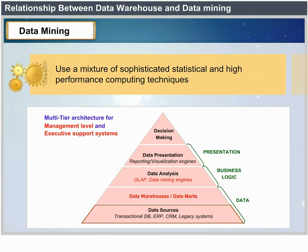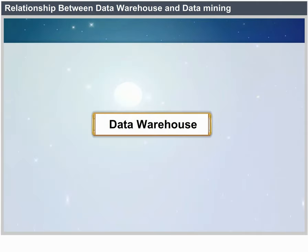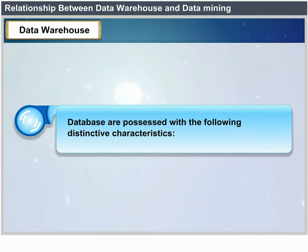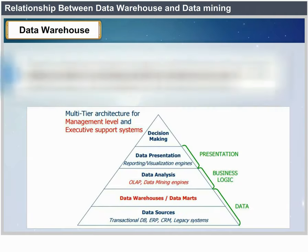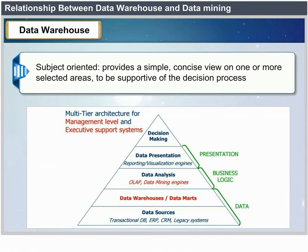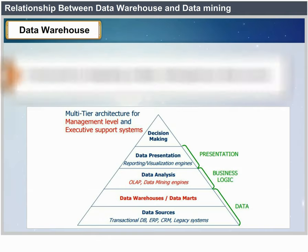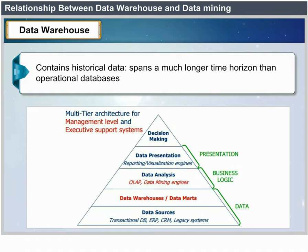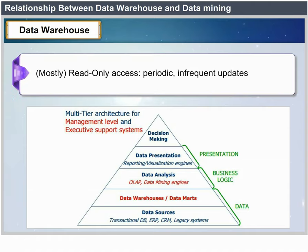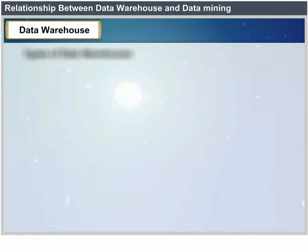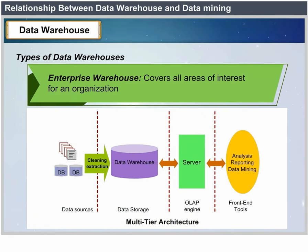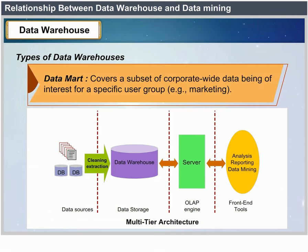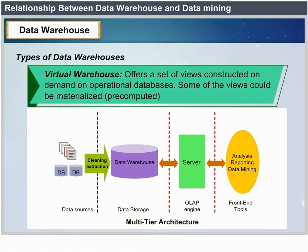OLAP (Online Analytical Processing) provides reporting based on multidimensional data analysis, with read-only access on repositories of moderate-to-large size — typically data warehouses — aiming at maximizing response time. Data mining involves the discovery of novel implicit patterns from possibly heterogeneous data sources, using a mix of sophisticated statistical and high-performance computing techniques. A data warehouse is a database with distinctive characteristics: separate from operational databases, subject-oriented, provides a simple concise view in support of the decision process, is constructed by integrating multiple heterogeneous data sources, contains historical data spanning a much longer time horizon, and has mostly read-only access with periodic infrequent updates.